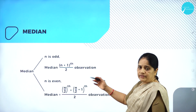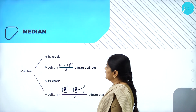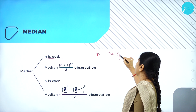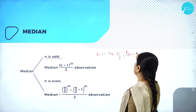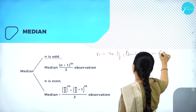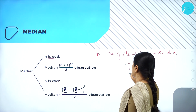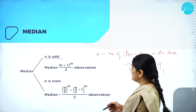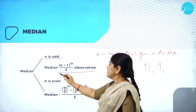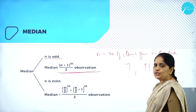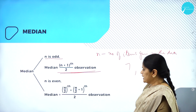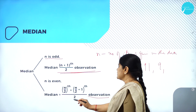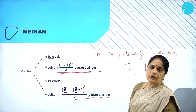The median can be easily computed by sorting the data from smallest to largest and finding the middle value. We have the formula here. If n is odd — where n is the number of items in the data — the median is the value at the (n+1)/2 observation. If n is even, the median is the average of the n/2 and (n/2 + 1) observations, that is [n/2 + (n/2 + 1)] divided by 2.